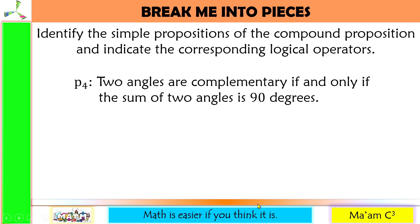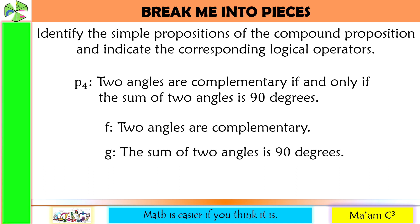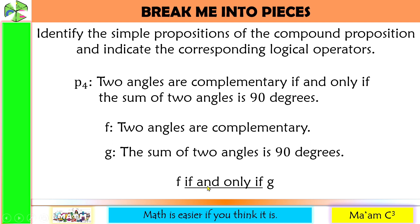P sub 4 is: 'Two angles are complementary if and only if the sum of two angles is 90 degrees.' One proposition is 'two angles are complementary' and another is 'the sum of two angles is 90 degrees.' The logical operator used is 'if and only if' — proposition F if and only if proposition G.